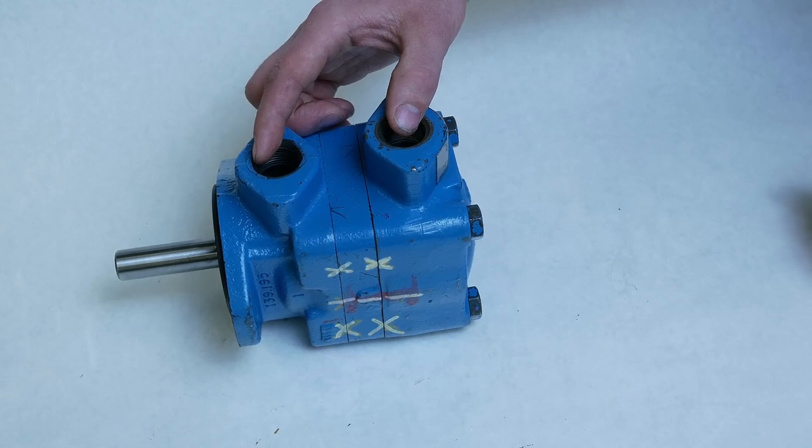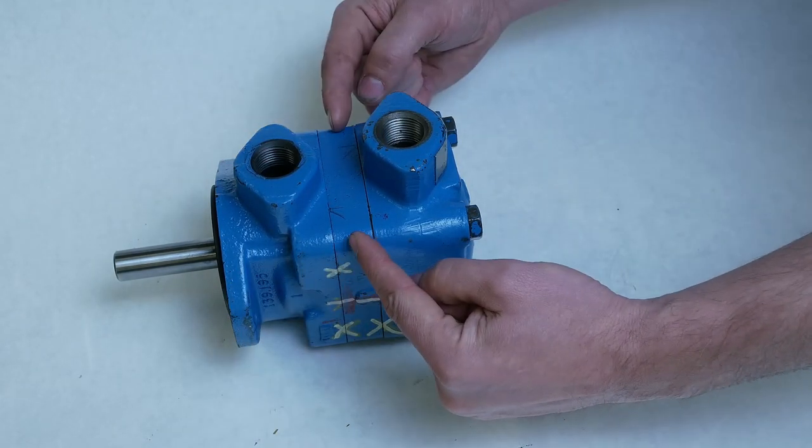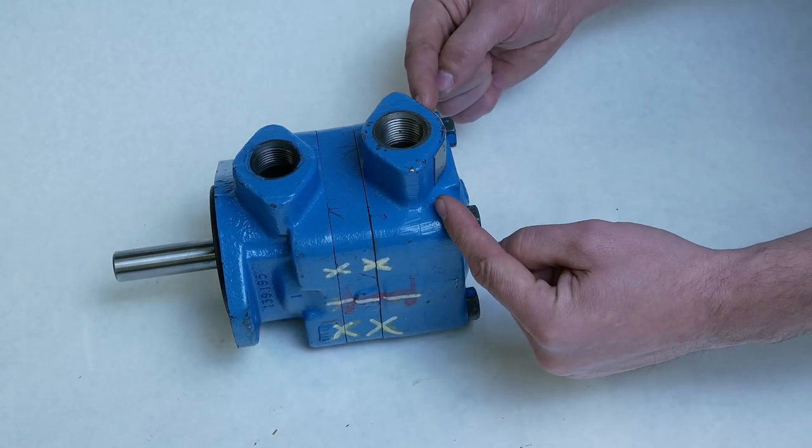We can see this is a three-piece because it's got a front housing, a center housing, and our rear housing.